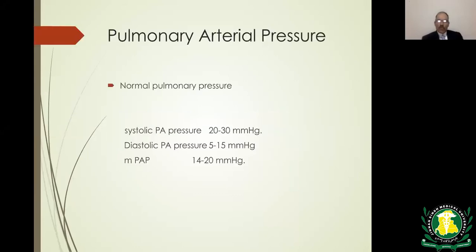Normal pulmonary pressure: systolic blood pressure is 20 to 30, diastolic is 5 to 15, and mean arterial blood pressure is 14 to 20. These values were derived from about 12,000 volunteers across 14 different studies conducted in 13 different countries.